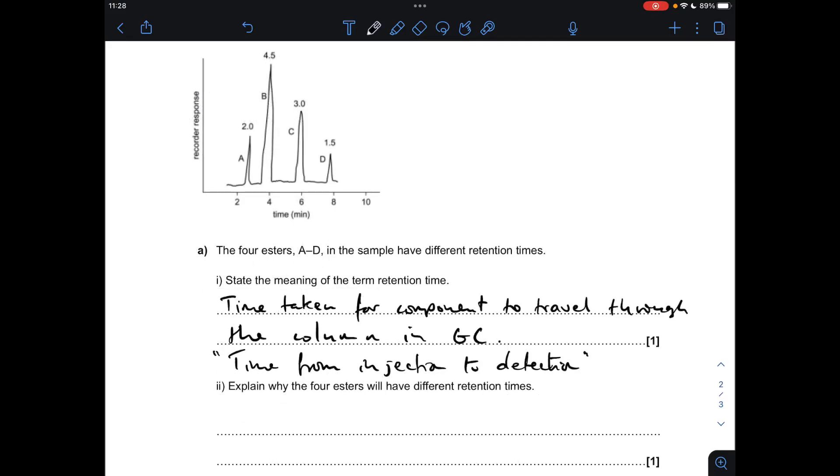Moving on to the next part of the question: explain why the four esters will have different retention times. Remember, it's gas liquid chromatography, so the components, the esters, will dissolve by different amounts into that liquid stationary phase. So the way to say that is they have different relative solubilities in that liquid stationary phase.